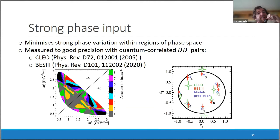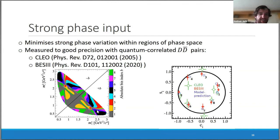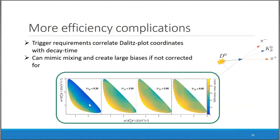The strong phase input comes from external measurements using quantum-correlated DD-bar pairs, using measurements from CLEO as well as BESIII. These parameters vary for different bins, and the bins were defined to keep nearly constant strong phase differences within each bin.